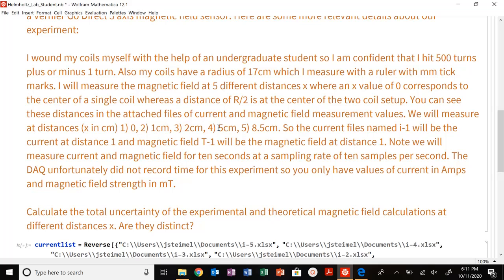The data file where it's dash one is going to be at an X value of zero. So at the center of the coils, not at the center of my apparatus. Then two, one centimeters, three, two centimeters, four, five centimeters, five, eight point five centimeters, which is 17 divided by two.